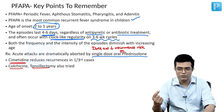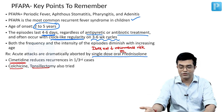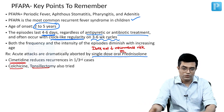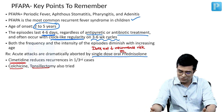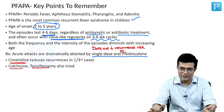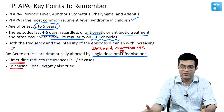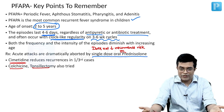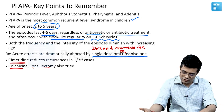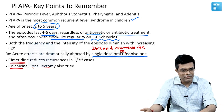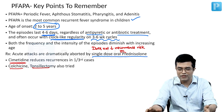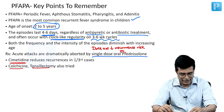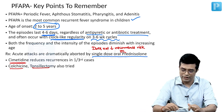Prednisolone's single tablet costs about 2 rupees, whereas anakinra is a biological therapy that costs lakhs. All biologicals also have side effects. So if the question asks whether anakinra is effective — yes, it is effective. But if they ask whether it is given, the answer is no. Prednisolone or steroid is good enough. For recurrence risk, Cimetidine, Colchicine, and as a last resort, tonsillectomy can be tried.